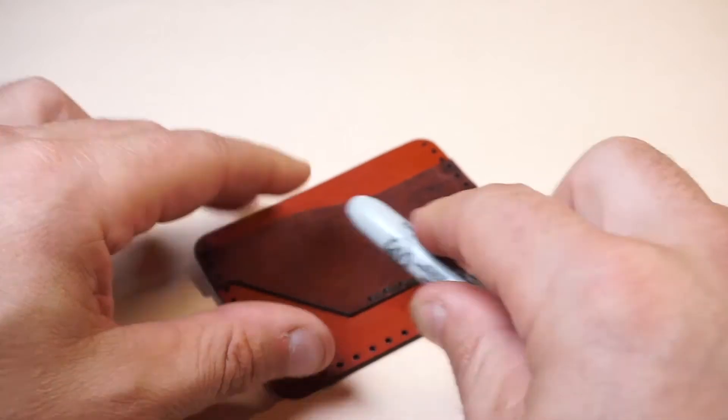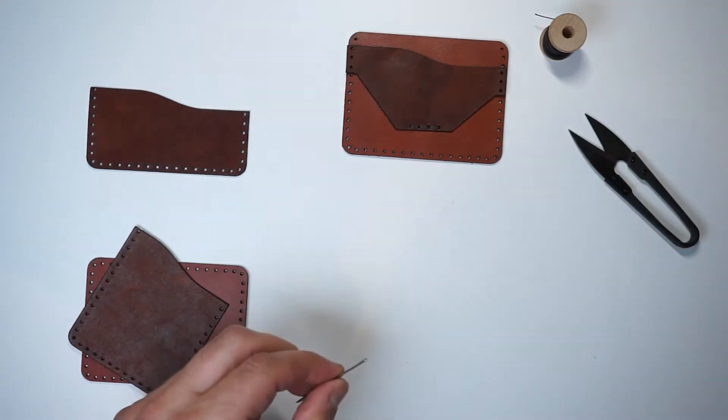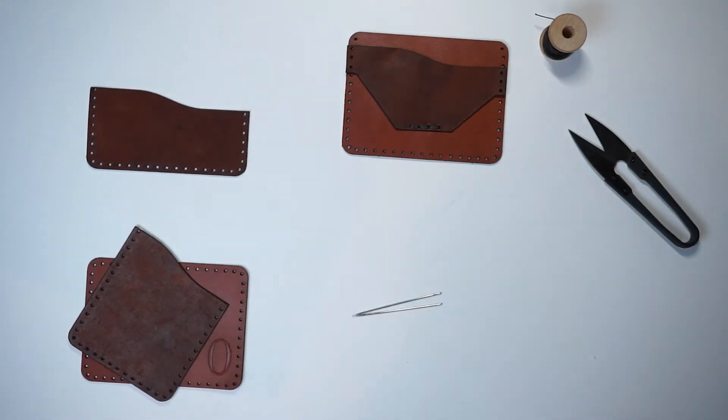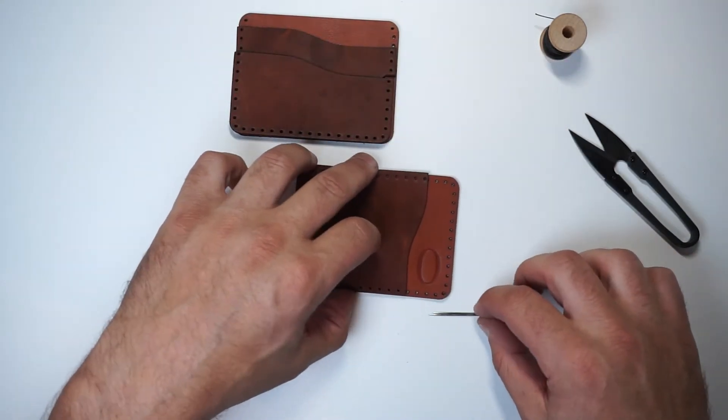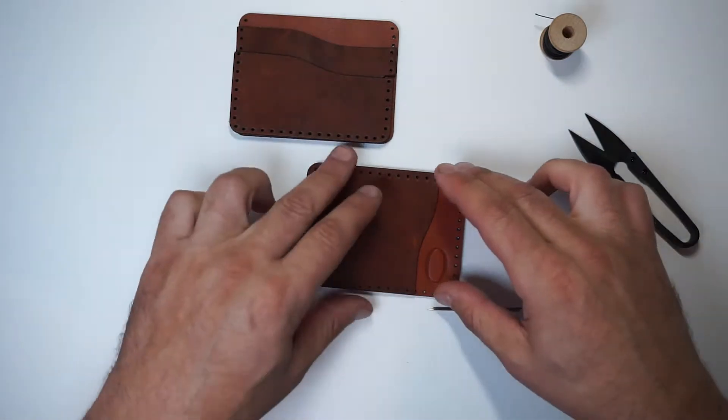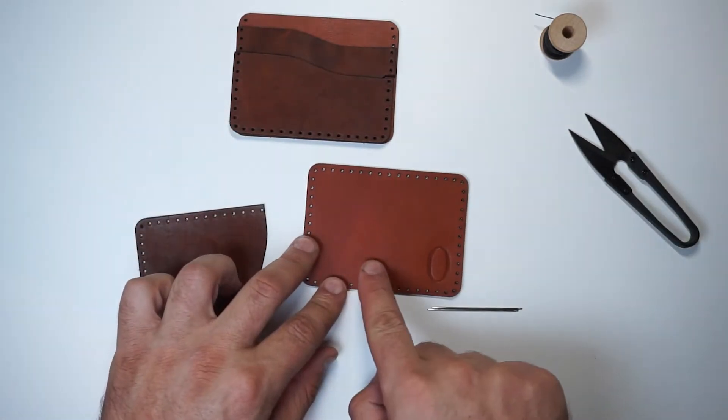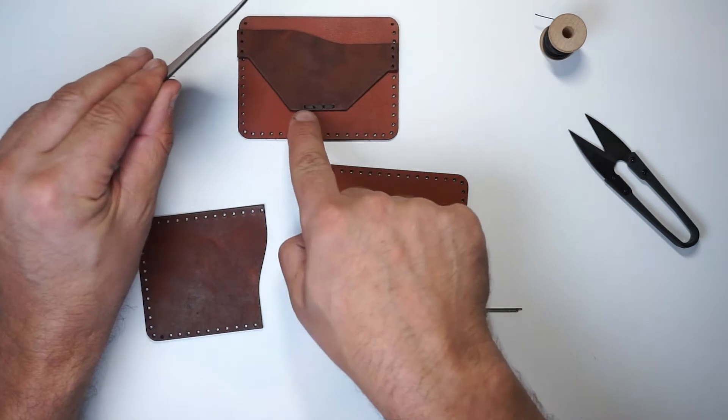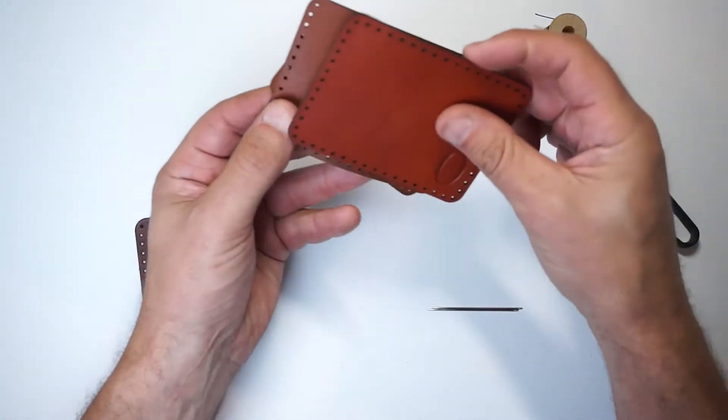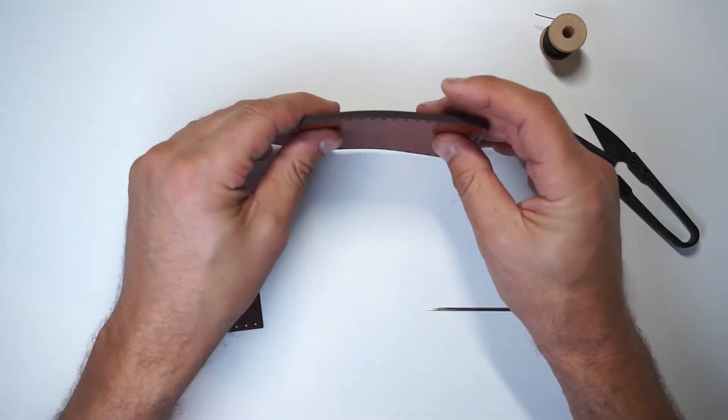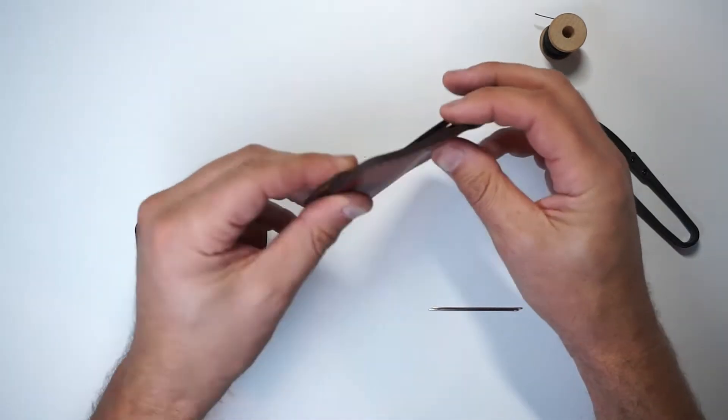All right, we're going to set that aside, and now we're ready for stitching the main wallet. These pieces can get set aside, and we are going to work with these pieces here that have the O. As you can see, there are four little dots here, and those correspond to these four stitching holes here so that when we put these back to back as we add the second piece, all the stitching holes line up.